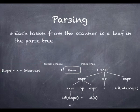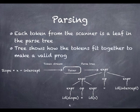Each token from the scanner is a leaf in the parse tree. Taken as a whole, the tree shows how the tokens fit together to make a valid program. But where do all these nodes in the middle come from?